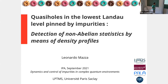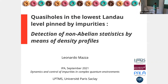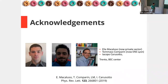Quantum Hall effect physics — quasi-holes pinned by impurities. The keyword is that these impurities create anyons with non-Abelian statistics. What I want to discuss is how to detect and highlight these non-Abelian statistics without using interferometry, but instead using density profile techniques.